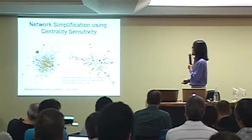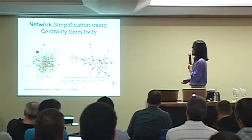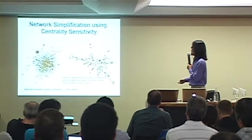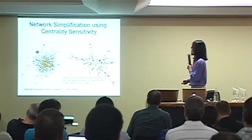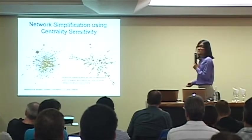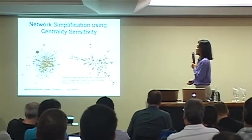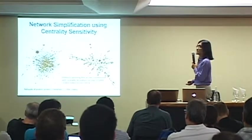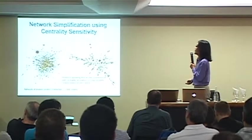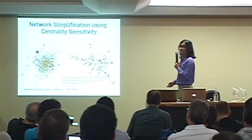And so what we get is a much cleaner network to look at and then to start analysis. And what's important here is that the originally central node remains central in this core network. And from here, the analyst can then add certain edges back based on what they want to study. So this is just one way to deal with size and the complexity.